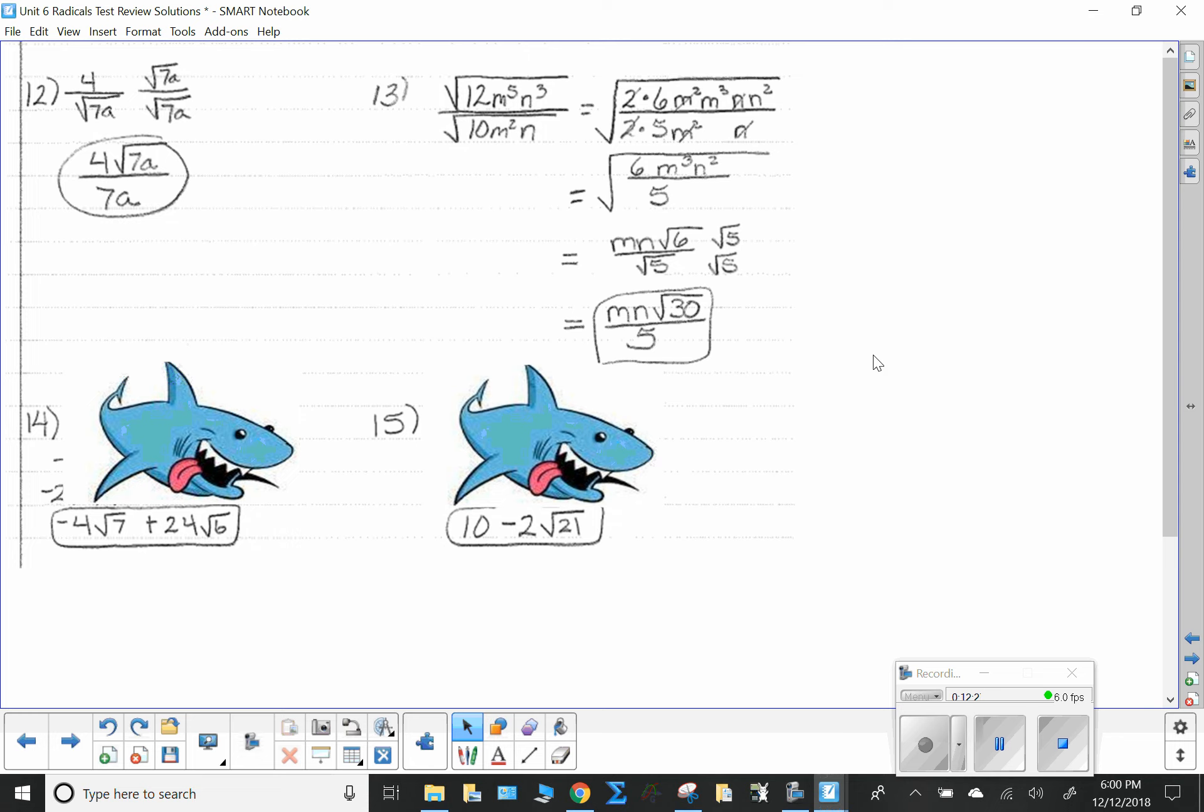Number 13. I'm going to break everything up and simplify it. But before I do that, remember that it's an even index. Yep. Odd, odd. All good. Don't have to worry about absolute values. I break apart the 12, the m to the 5th, the n cubed, so that I can simplify it. Now that it's simplified, I now notice all I have in the denominator is a square root of 5. I can also bring an m out and an n out and leave the 6 underneath.